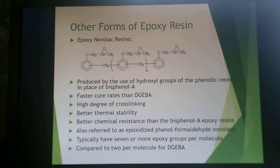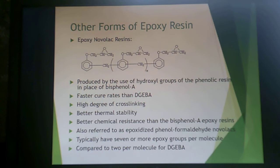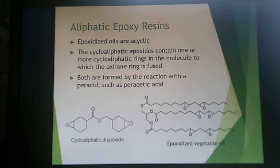While DGEBA-based resins are the main form, there are other types. Epoxy novolac resins are produced using hydroxyl groups of a phenolic resin in place of bisphenol A, giving faster curing rates, a higher degree of cross-linking, better thermal stability, and better chemical resistance than bisphenol-A-based resins. Also referred to as epoxidized phenol-formaldehyde novolac, these resins typically have seven or more epoxy groups per molecule, compared to only two on DGEBA, enabling much more highly cross-linked species.